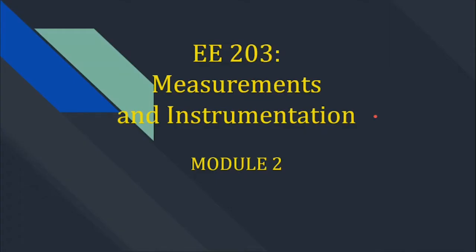Welcome to Module 2 of Measurements and Instrumentation. Here we will see measurement of power, measurement of energy, current transformers and potential transformers, extension of range using instrument transformers, and Hall effect multipliers.